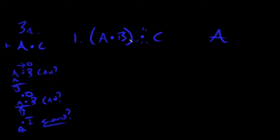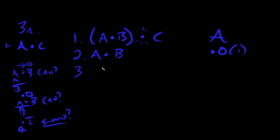Breaking apart the dot gives us two things. We get 'a dot b' — now freed from its parentheses — and 'c' by itself. For both, the move is and-out with source material at line one. So we've broken everything down from that one assumption.